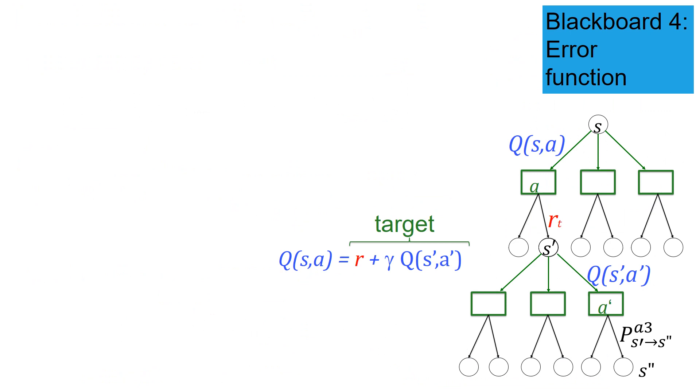So now we have this loss function and let me write it again. So here was the target. So we compare the target R plus gamma Q of S prime A prime with the Q value that we want to change, the Q value up here, Q of S A. And then we take the whole thing and square it. And then for purity reasons, you can put in a one half in front, you don't have to. And then this would be my error function, my loss function.